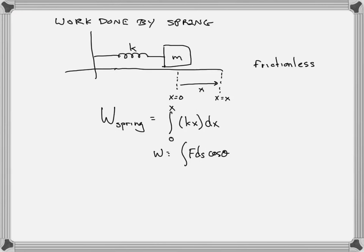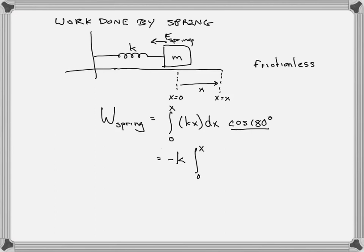The spring force is pulling backwards while x, the displacement, is to the right, so the angle is 180 degrees. The work done by the spring equals cosine 180 giving us minus 1, so we get minus k times the integral from 0 to X of x dx, which is minus kx² / 2 evaluated from 0 to X, or minus ½kX².